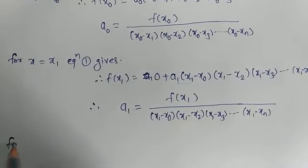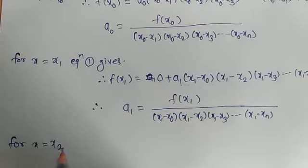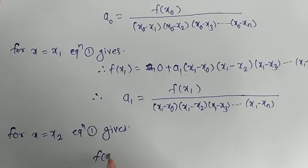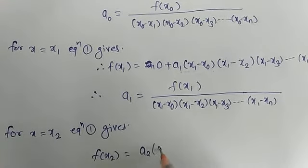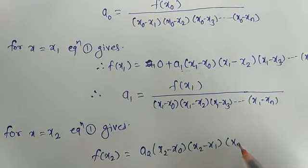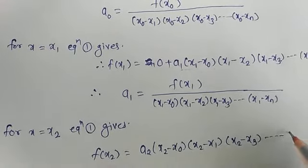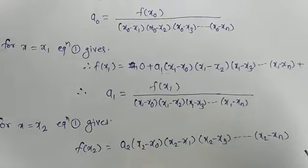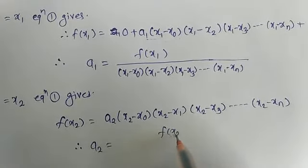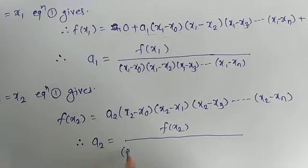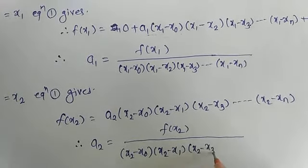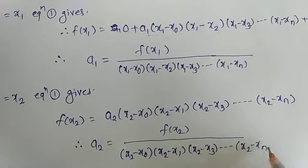For x = x2, equation 1 gives f(x2) = a2 · (x2 − x0)(x2 − x1)(x2 − x3)···(x2 − xn). Therefore, a2 = f(x2) / [(x2 − x0)(x2 − x1)(x2 − x3)···(x2 − xn)].